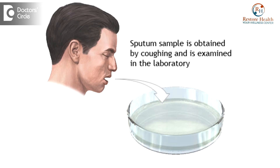The sputum is taken at two times. It is taken in a cup — when you go to a lab, there is something called a spot test, which means at that moment you have to bring out your sputum into a cup and give it for testing. The second sample is collected early in the morning when you wake up — you cough out the sputum and that is given for testing.